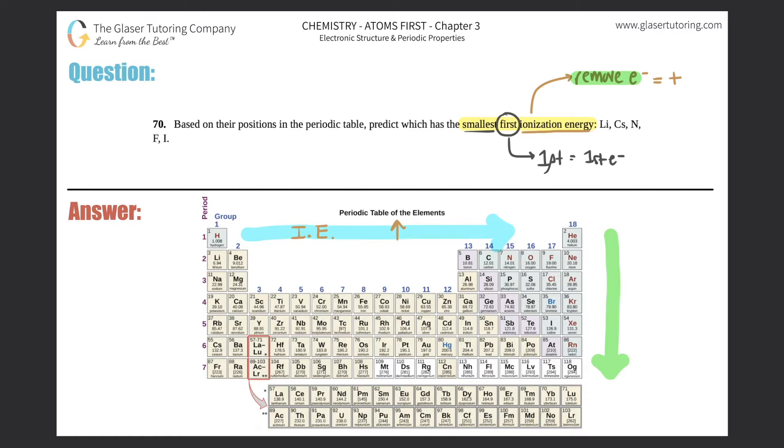Now going down a group, as you go from top to bottom, ionization energy decreases. So going down from fluorine to iodine and below, your ionization energy decreases. That means you have much higher ionization energies at the top compared to the lower ones.